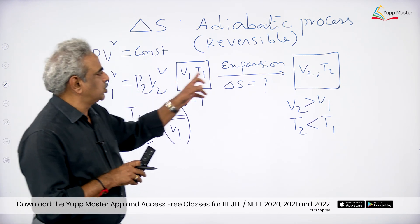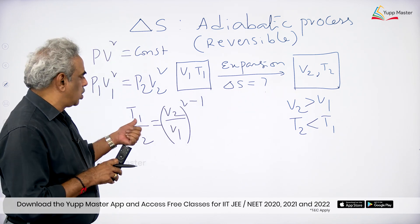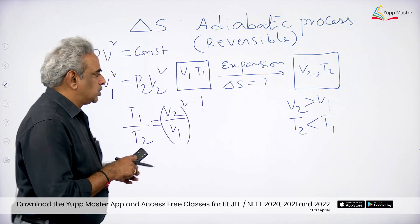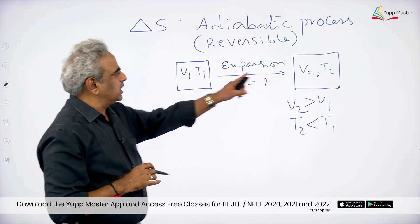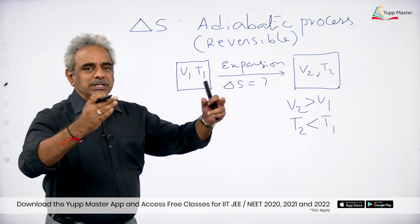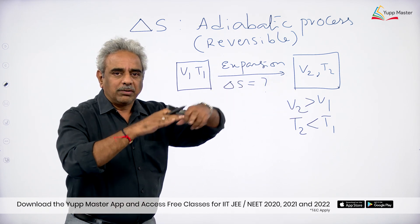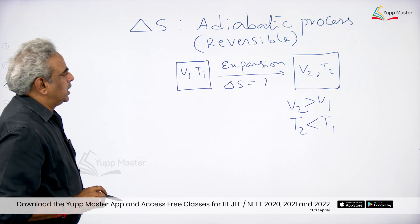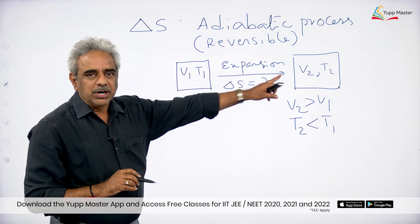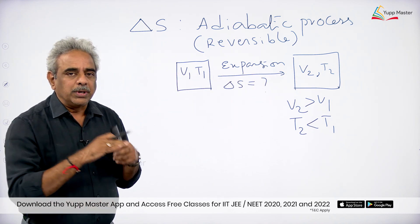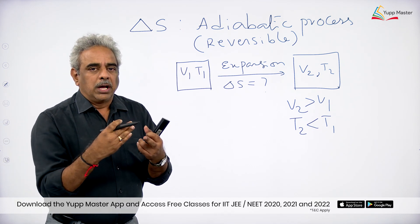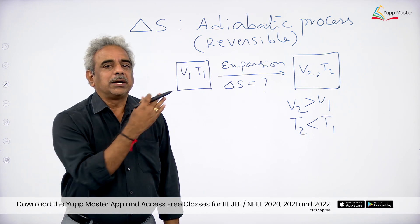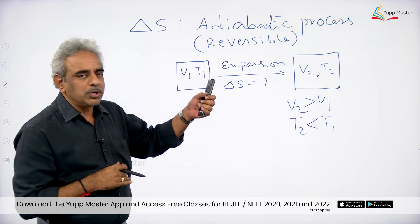So what is happening here: an increase in volume will increase entropy, while a decrease in temperature will decrease entropy. Which effect will dominate, or will the entropy change be zero? That is what we have to prove, so let us approach this in a mathematical way.